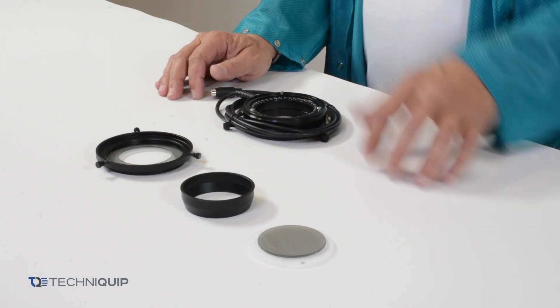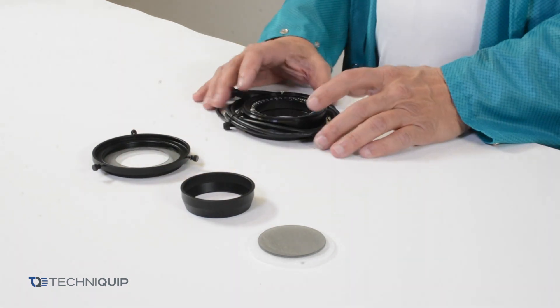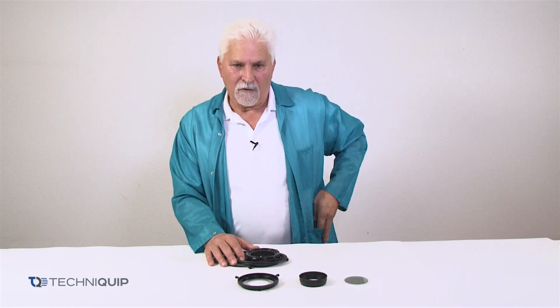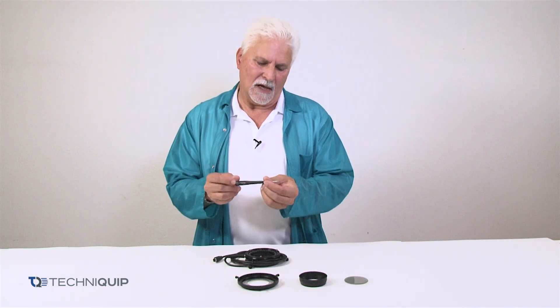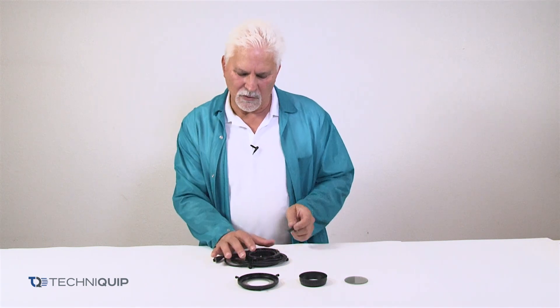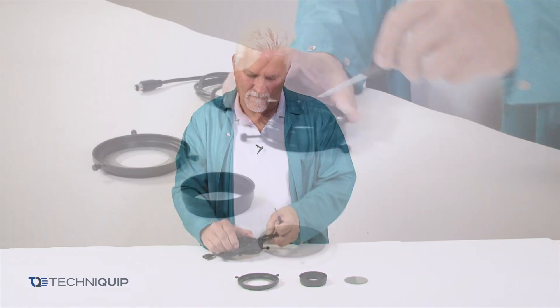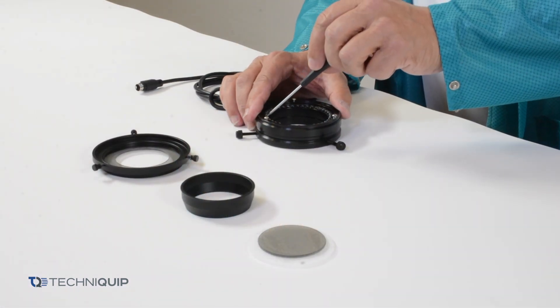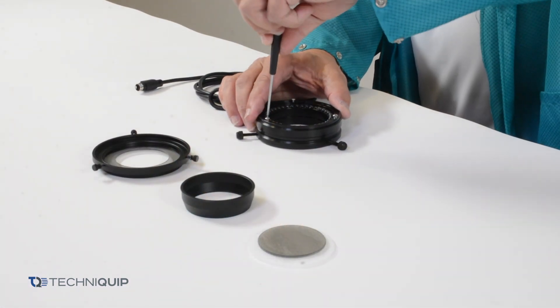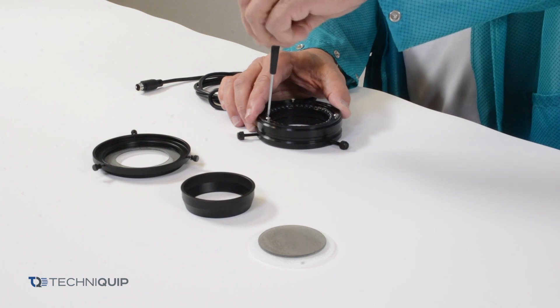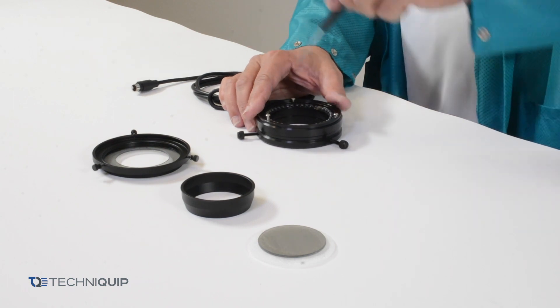In order to install the polarizer kit into the ProLine, you're going to first need an Allen wrench. It'll be a sixteenth inch Allen wrench and that'll be used to dismantle the ring light itself. There are three screws located on the ring light. Those need to be backed out carefully.